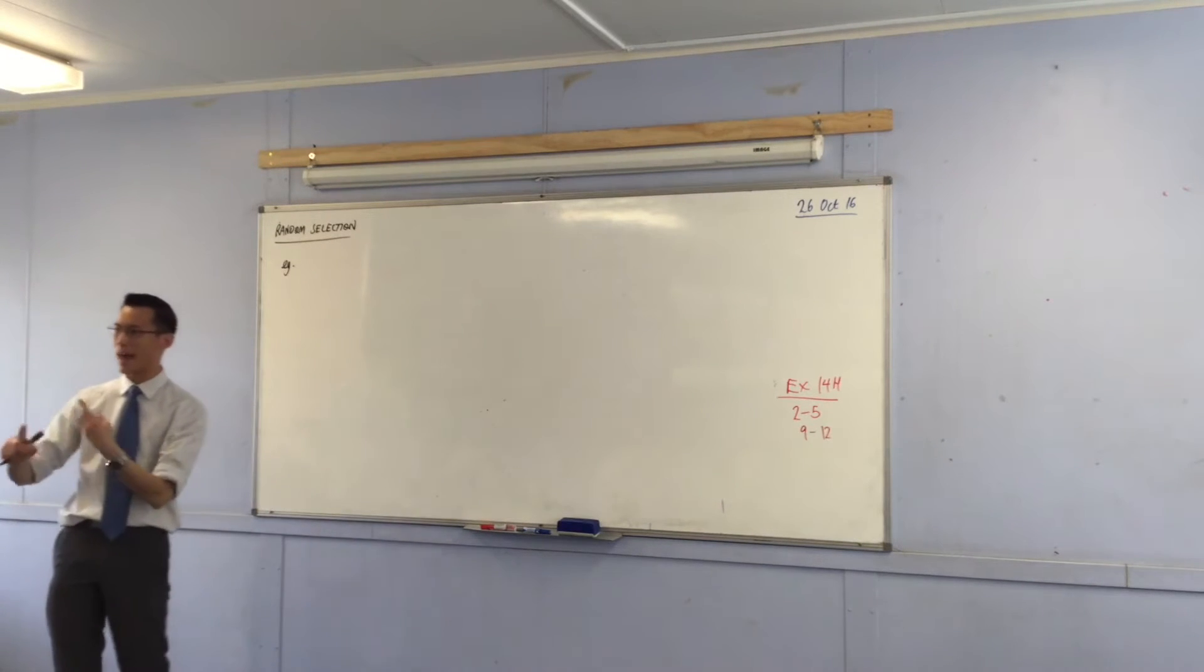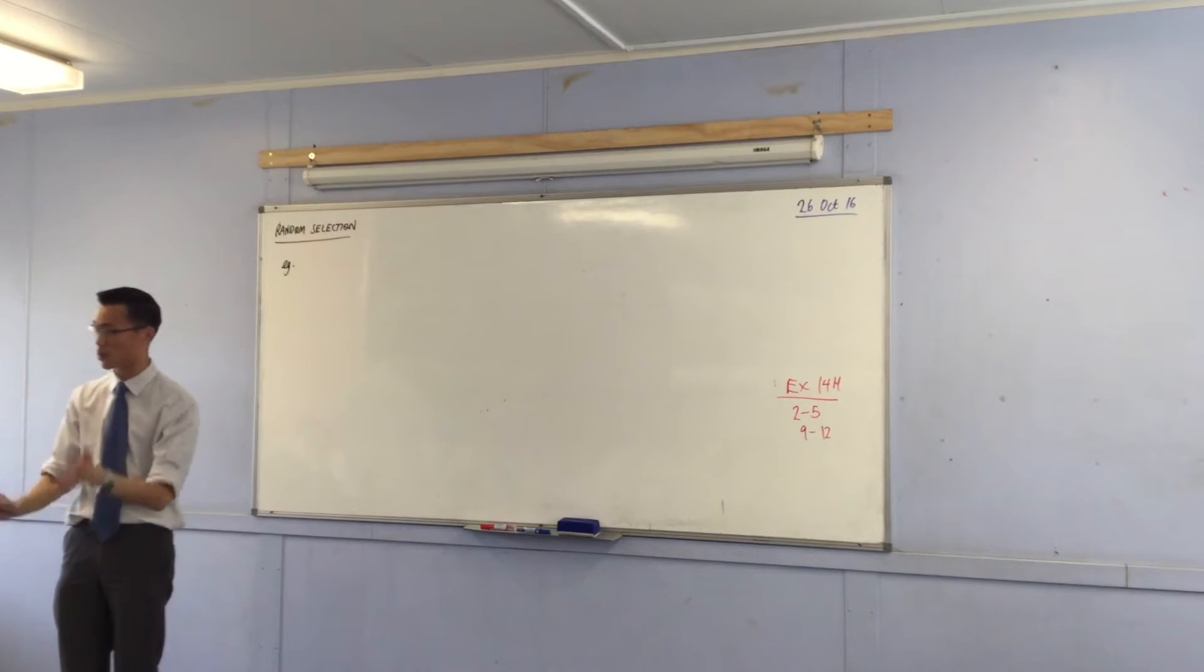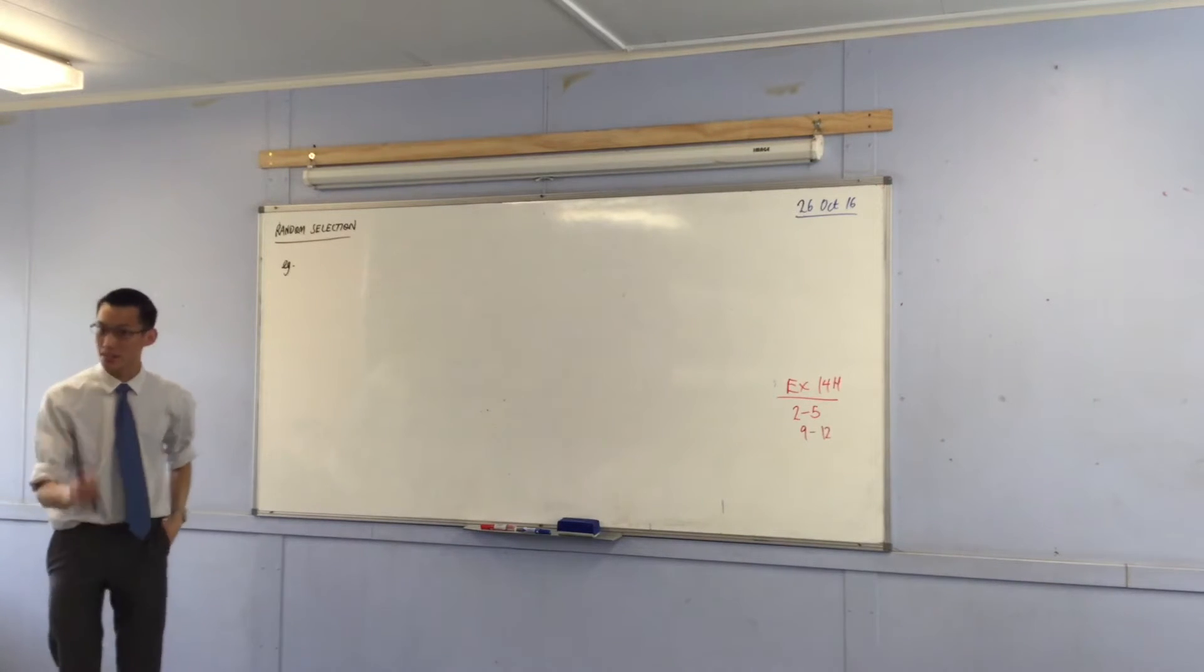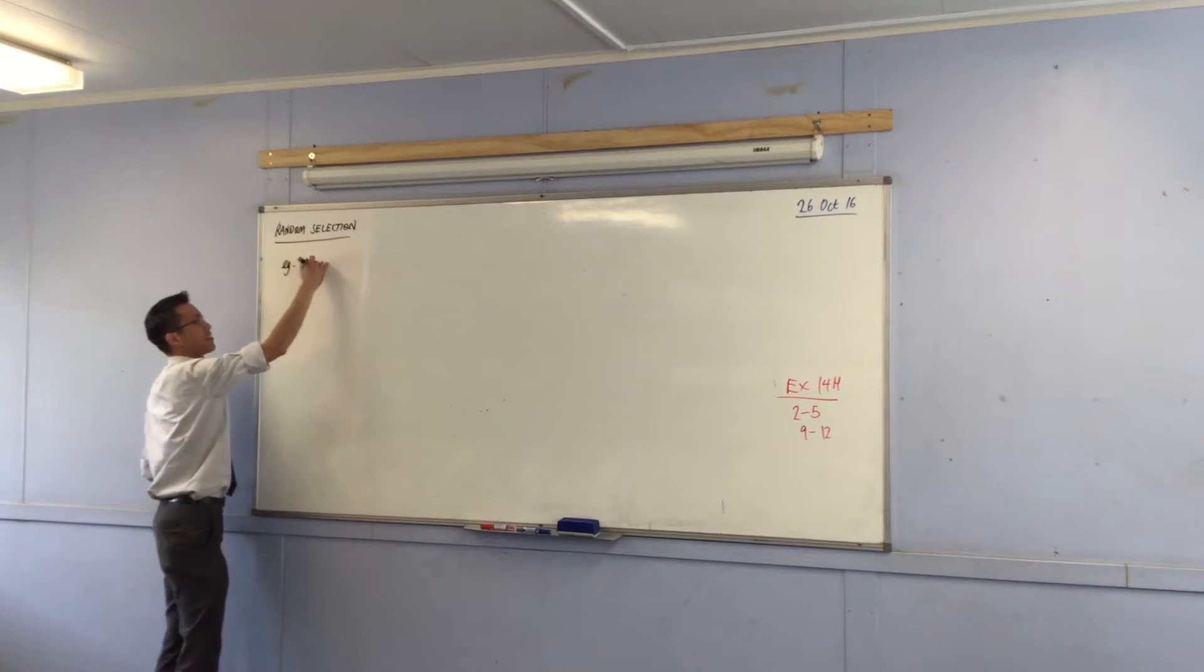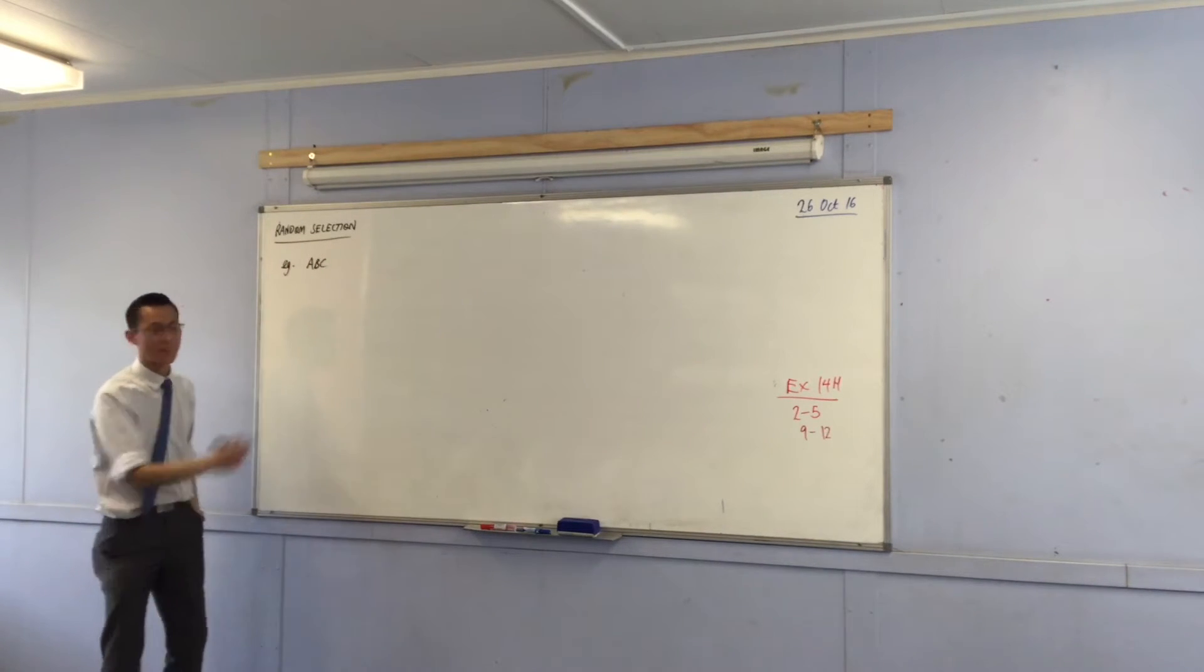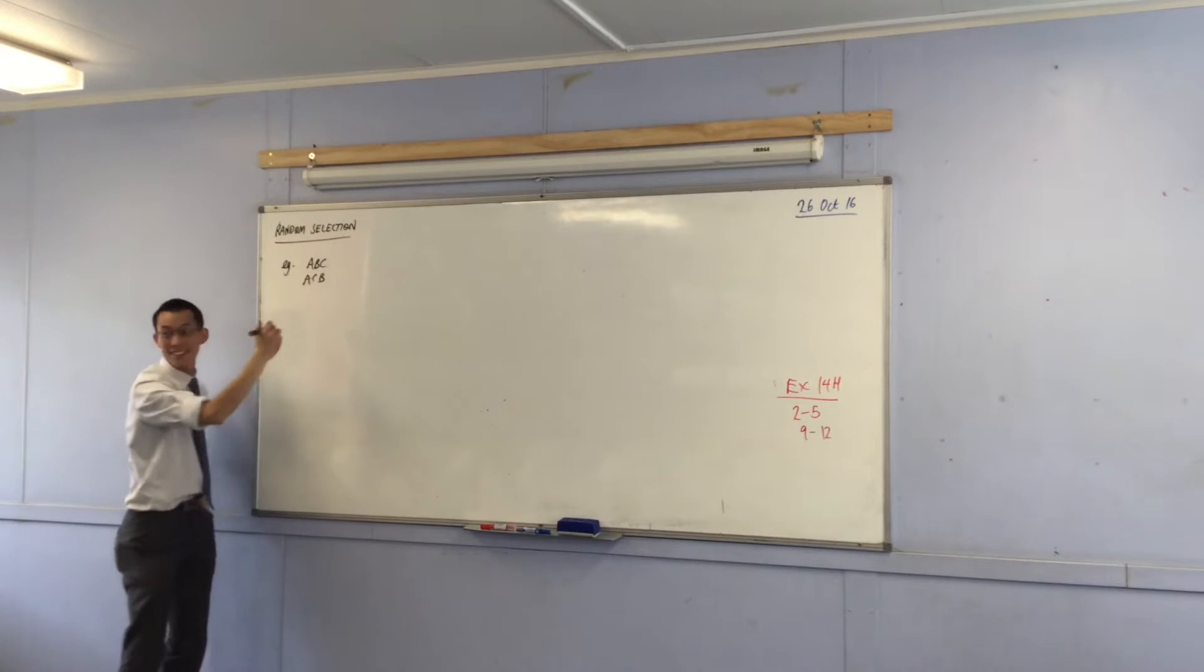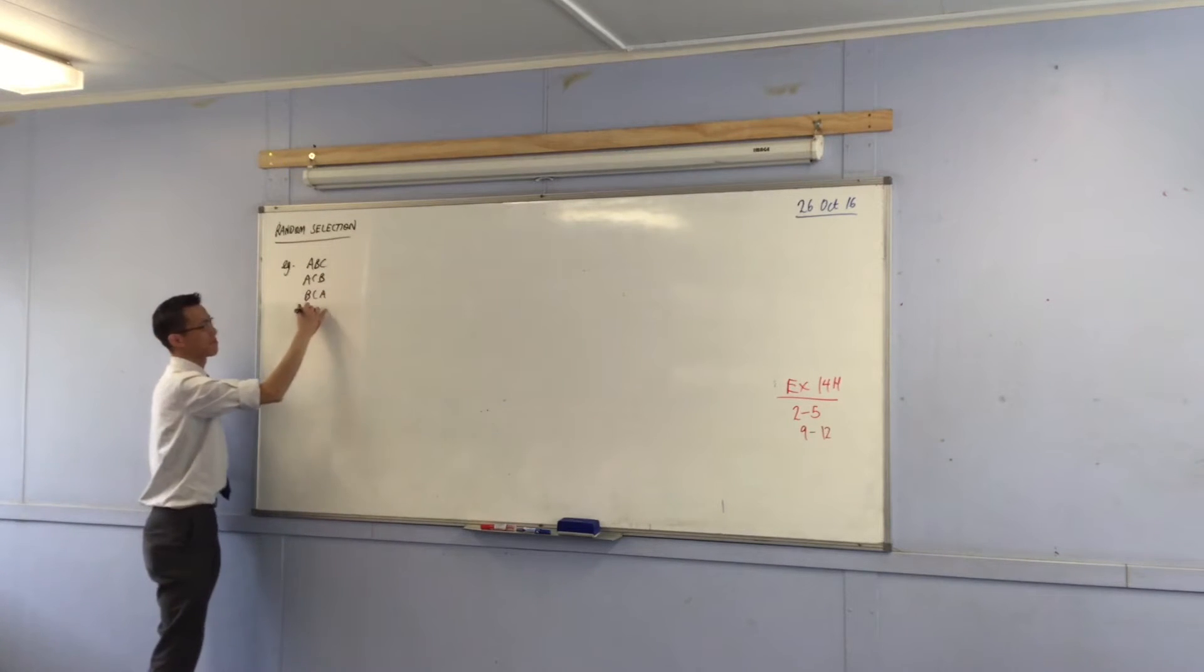If the songs are called A, B, and C, we can actually write out all of the possible orders. There are six of them. Someone want to suggest one? ABC. That's the first one. Give me another one. ACB. Okay. BCA. Another one? BAC. Last two? CAB. And CBA. Okay.